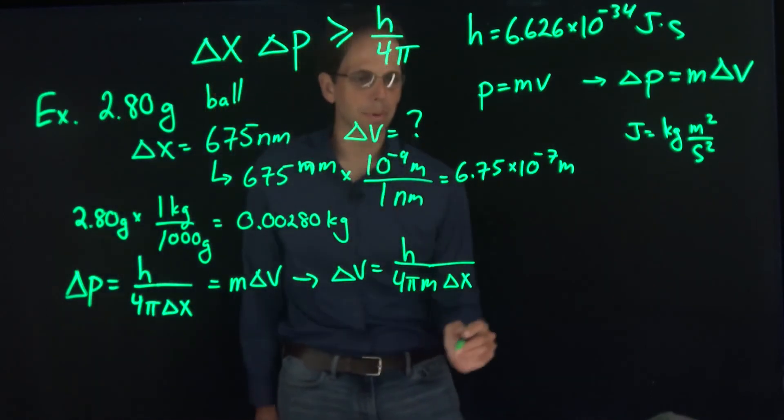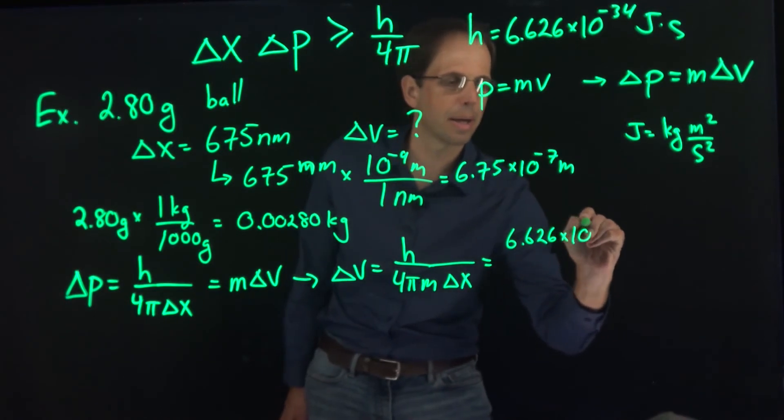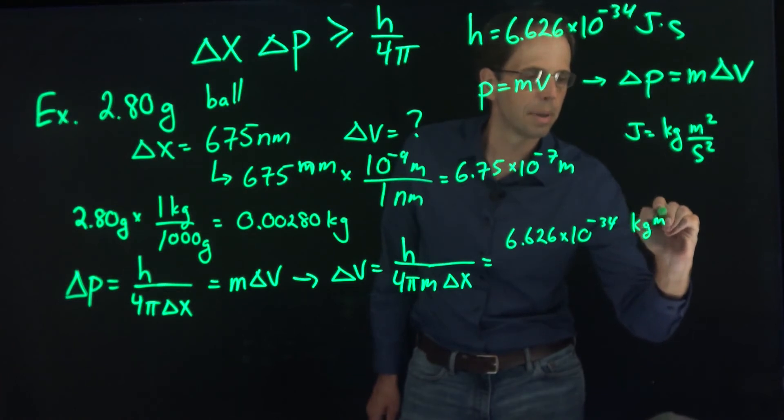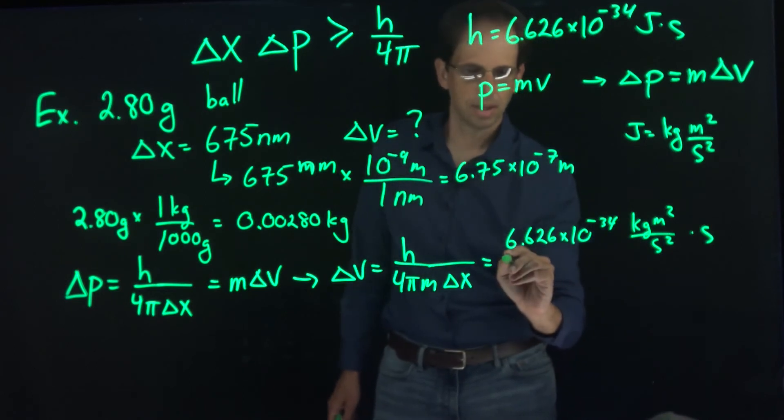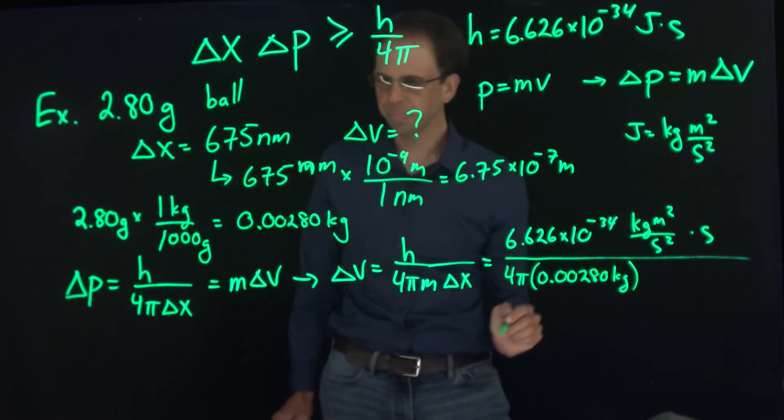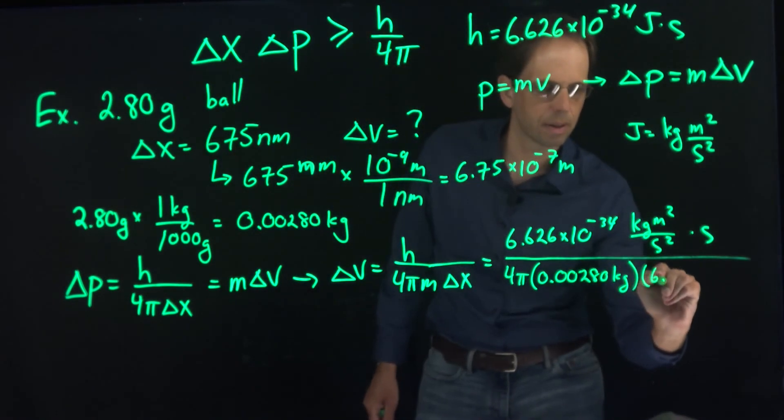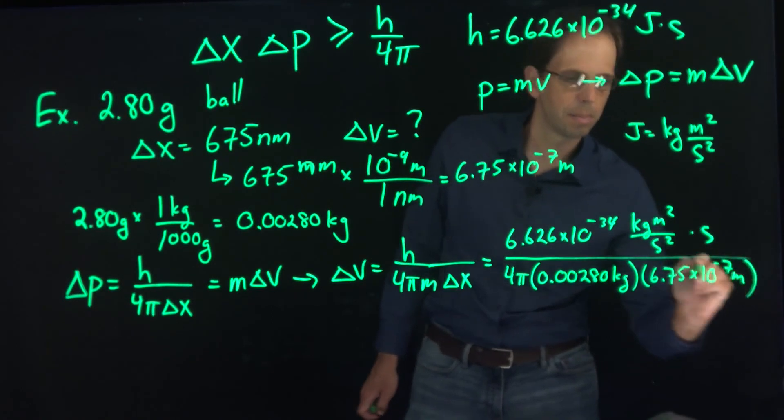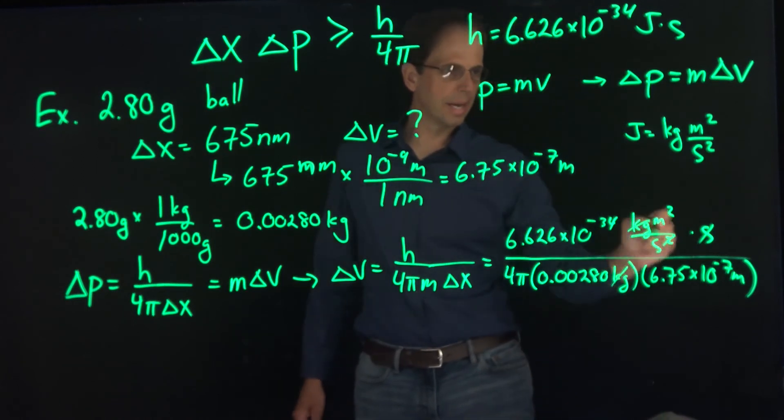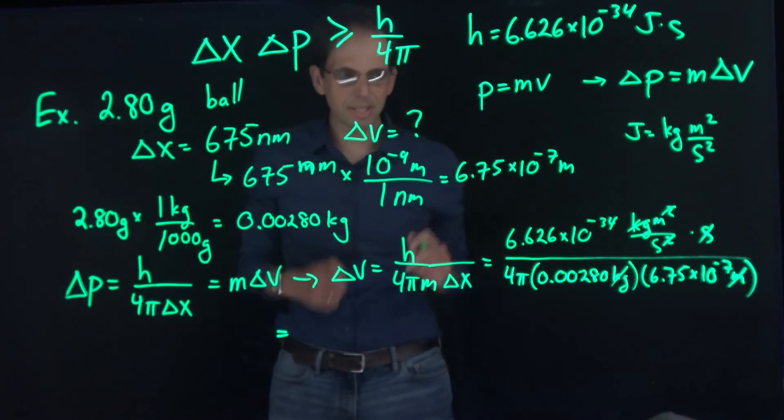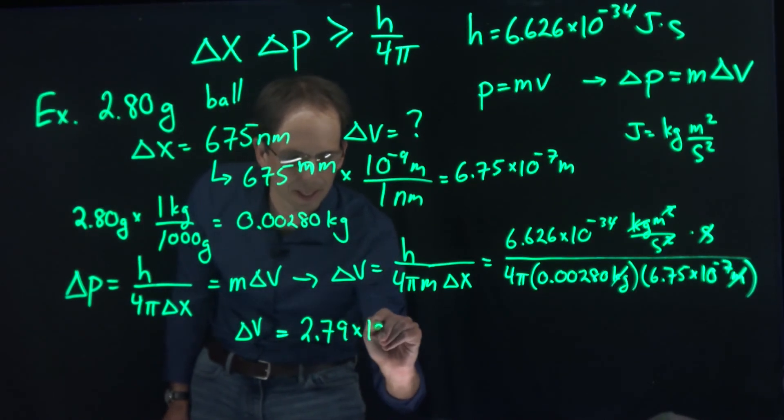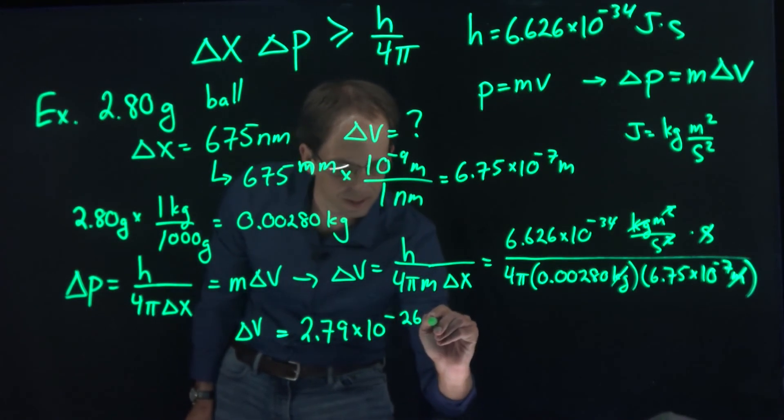Now it's just a matter of plugging in the numbers. I'm going to plug in Planck's constant, 6.626 times 10 to the minus 34. And I'm going to write the units out, so I get kilograms meters squared per second squared times seconds. In the denominator, I have 4π times 0.00280 kilograms and 6.75 times 10 to the minus 7 meters. I can do some unit cancellation - kilograms cancel, one factor of seconds and one factor of meters cancel, and I'm left with meters per second. If I plug all these numbers into my calculator, I get that the uncertainty ΔV is equal to 2.79 times 10 to the minus 26 meters per second.